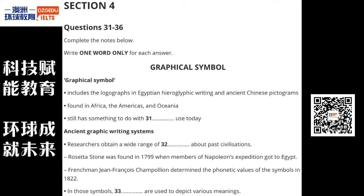Indeed, elements of pictography are still found in modern Chinese characters, and it is often an interesting exercise to trace the origins of some Chinese characters. Pictographs remain in common commercial use today as signs, instructions, or statistical diagrams. Road signs and public toilet signs, and even flat-pack assembly instructions utilising pictures, are considered pictographic.